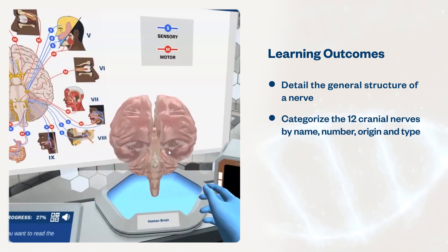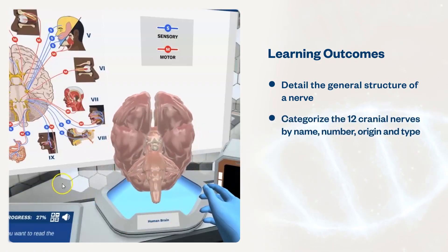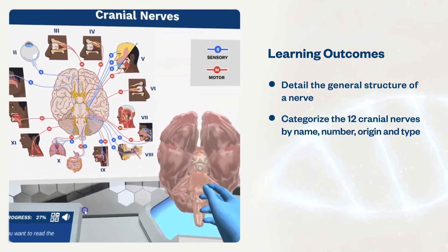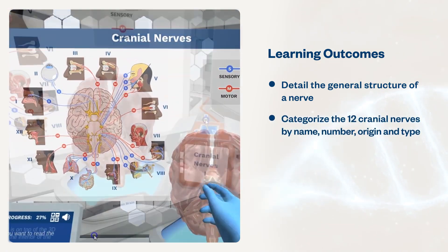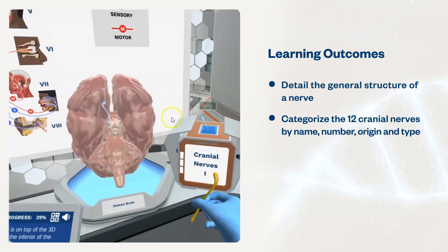Students will categorize the 12 cranial nerves by name, number, origin, and type, and briefly summarize their functions.